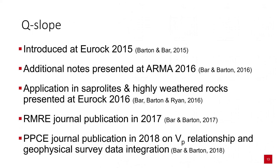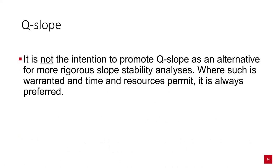Q-slope was introduced at the Eurock 2015 conference in Salzburg, Austria, with additional notes discussed at ARMA the following year. It was published in Rock Mechanics and Rock Engineering Journal in 2017, with over 400 case studies backing the method. In 2018, a relationship between P-wave velocity Vp and Q-slope was defined. It is not our intention to promote Q-slope as an alternative method where more rigorous slope stability analyses are required — such analyses, when warranted and where time and resources permit, are always preferred.